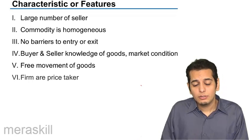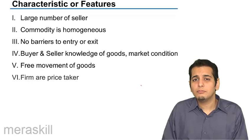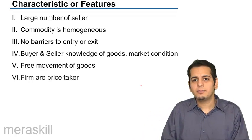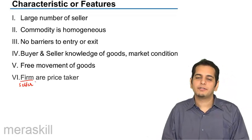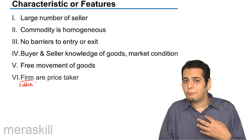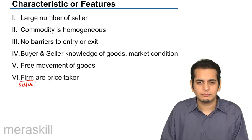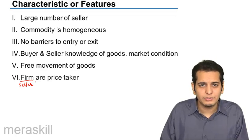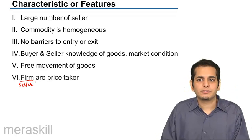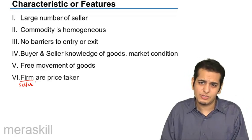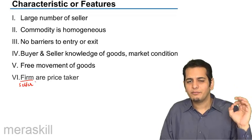Because of all the above assumptions, the firm — that is, the seller — becomes a price taker. The seller cannot set his own price because he is a very small player in the market. For example, in a toothpaste market, all sellers are selling the same toothpaste and the market price is set at 25 rupees.